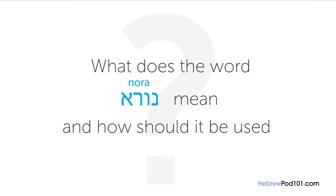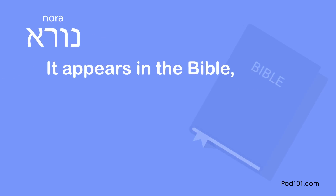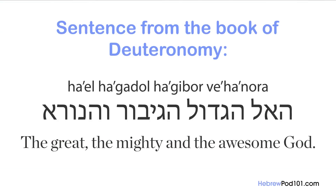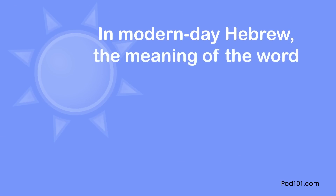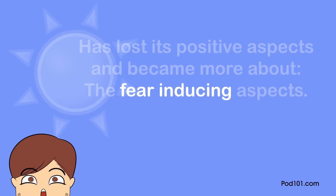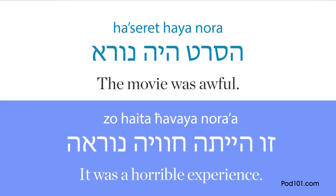The question for this lesson is: what does the word 'norah' mean and how should it be used? The word 'norah' has gone through some interesting changes over the years. It appears in the Bible meaning 'awesome' or 'awe-inspiring' in reference to God, as in 'ha-el ha-gadol ha-gibor ve-hanorah' — the great and mighty and awesome God. In modern-day Hebrew, 'norah' has lost its positive aspects and become an adjective meaning 'terrible' or 'awful': 'Ha-seret haya norah' — the movie was awful.